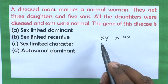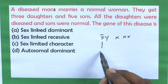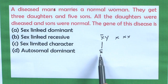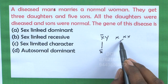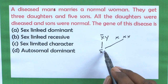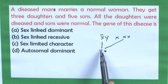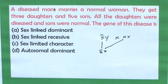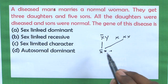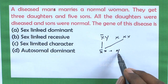If we consider one daughter, she receives one X chromosome from the father — and that X chromosome carries a dominant gene — and one X chromosome from the mother. Since the X chromosome has a dominant gene, the phenotype depends upon that dominant gene, and the daughter will be affected by the disease.